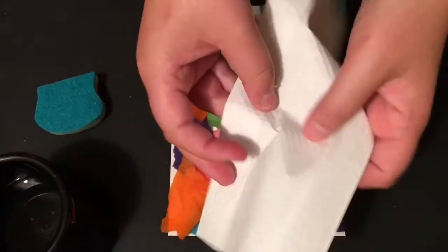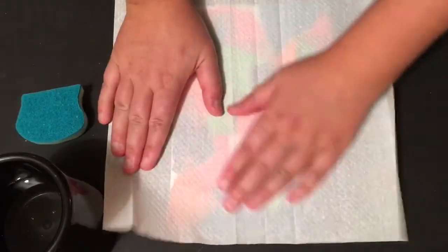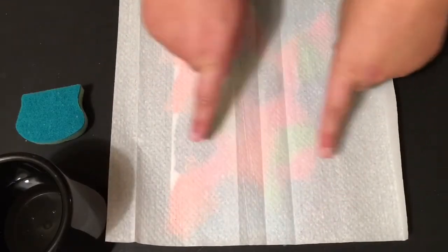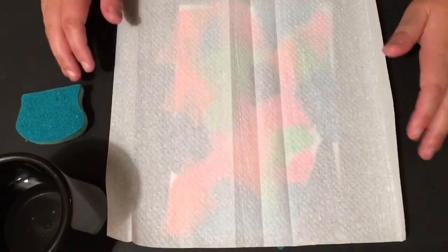You are now going to take your paper towel. You are going to open it up and place it over top of your paper. It is okay if some of the tissue paper moves underneath. It is totally fine. It is not meant to be perfect. It is supposed to be a collage picture.